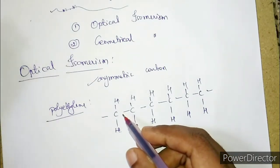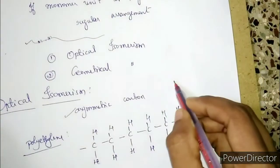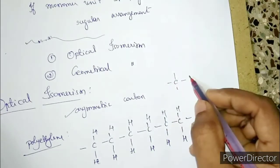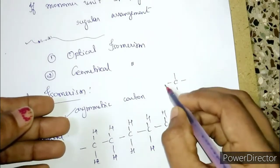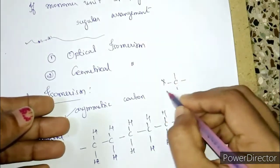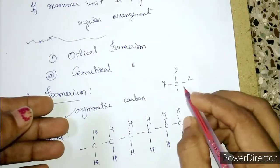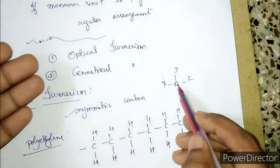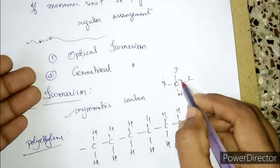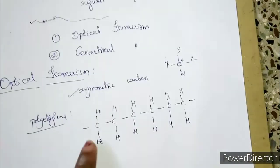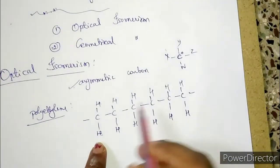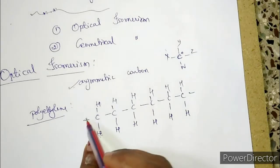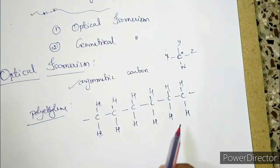We do not get an asymmetric carbon in polyethylene. An asymmetric carbon means a carbon where all the substituents present around it are different — say groups X, Y, Z, and W — all four different. Such a carbon is represented as C*. But in polyethylene, the groups attached to carbon are the same (hydrogen on both sides), so it cannot show optical isomerism.